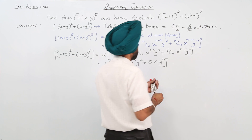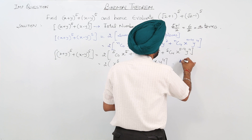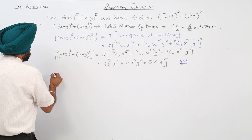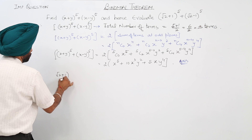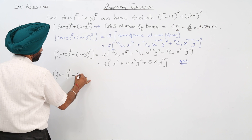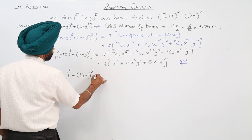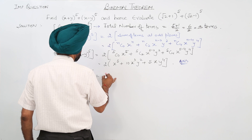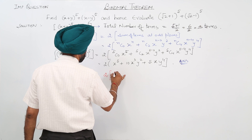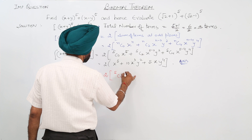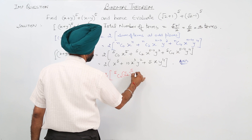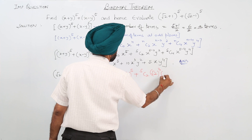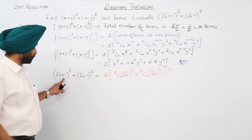This is the answer for the first part. Now we have to evaluate the given expression: (√2 + 1)⁵ + (√2 - 1)⁵. We can directly write it as twice of [⁵C₀ · (√2)⁵ + ⁵C₂ · (√2)³ · 1² + ⁵C₄ · (√2)¹ · 1⁴], where x = √2 and y = 1.